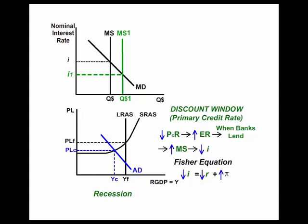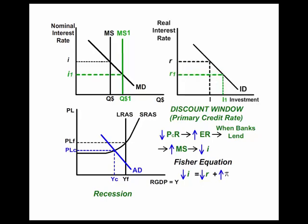We're going to put an investment demand curve in here. As the Federal Reserve lowers the primary credit rate, which increases excess reserves and banks lend, this increases the money supply, which lowers the nominal rate, which also lowers the real rate. As the real rate goes down, the quantity of investment goes up. As investment goes up, this will shift aggregate demand to the right.